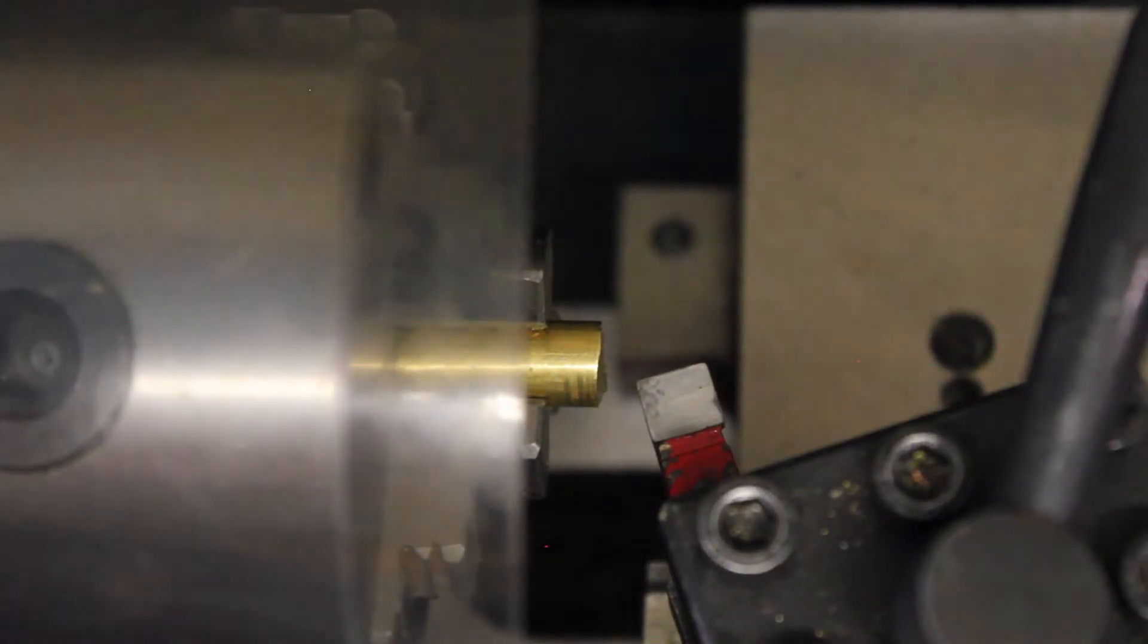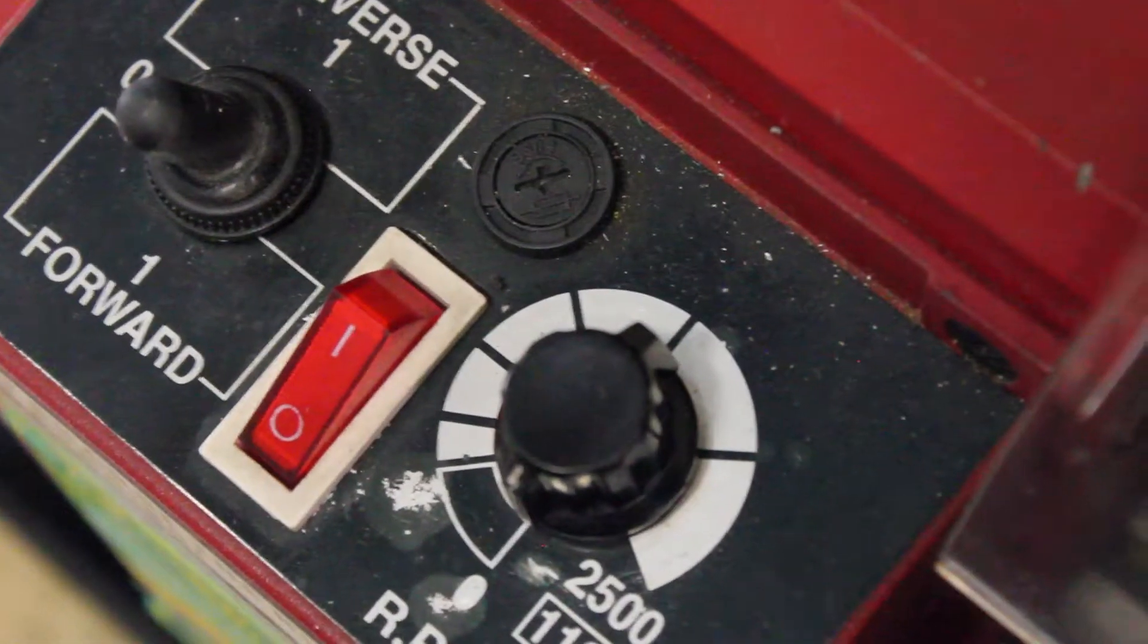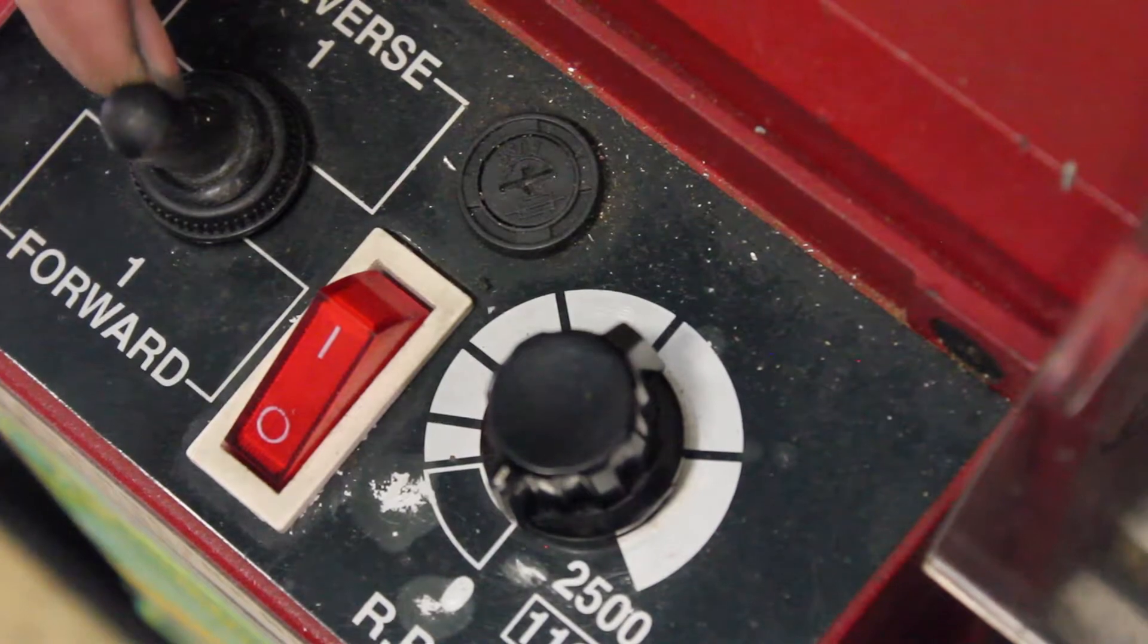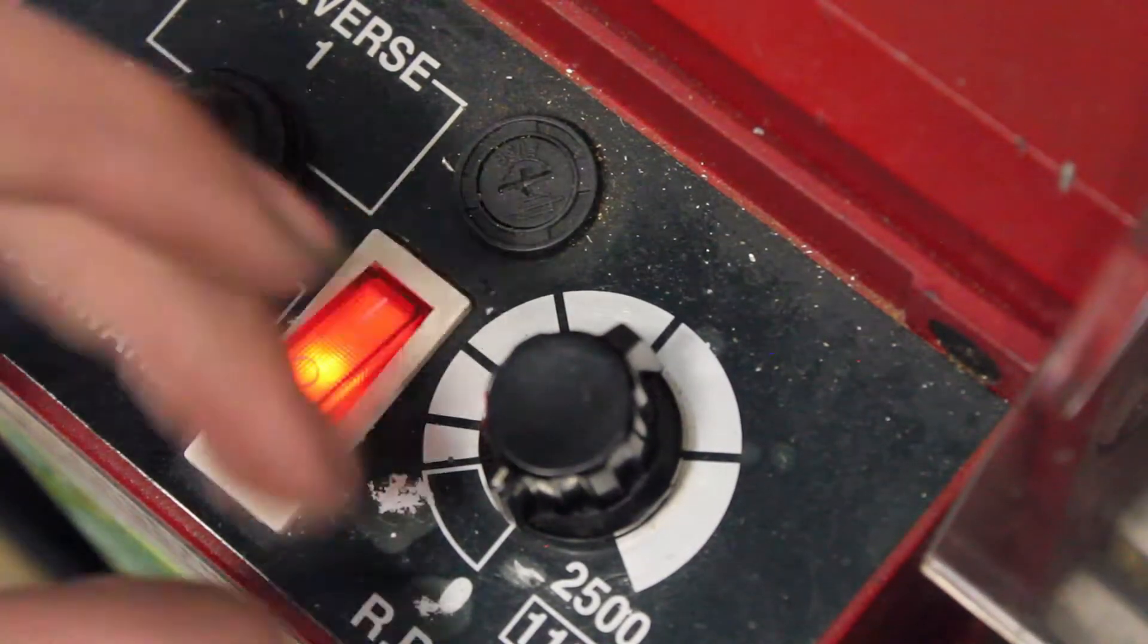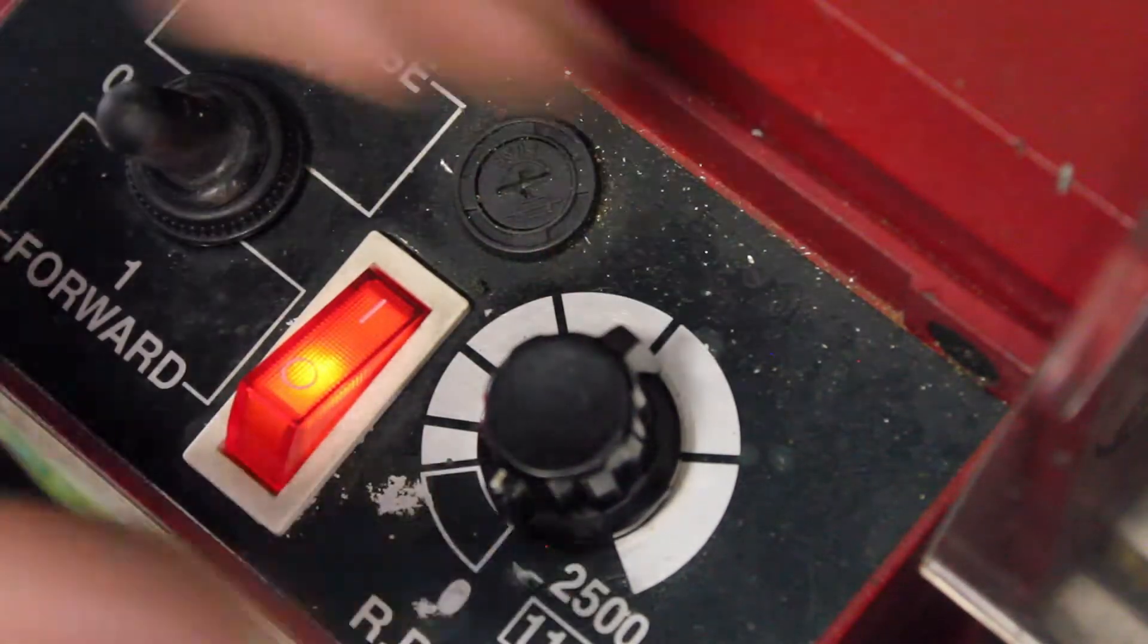Now we're finally ready to make our first cut. So if you come over to the headstock control panel, make sure your machine is in forward, turn the power on, and then use this knob to adjust your speed.